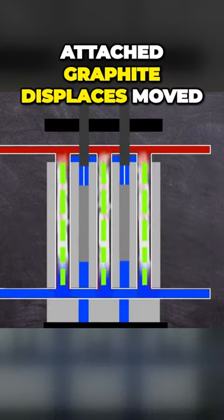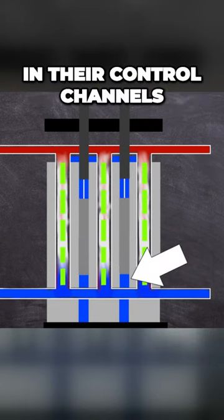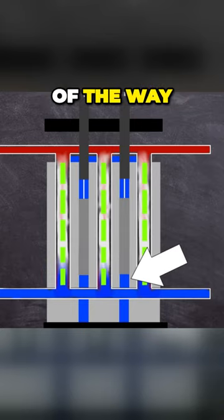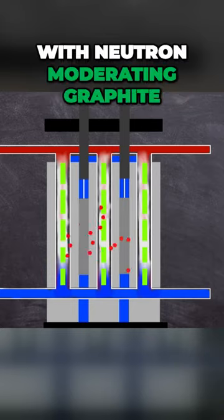As the control rod attached graphite displacers moved down to the lower part of the core in their control channels, the neutron absorbing water was pushed out of the way, creating a momentary spike in power, replacing it with neutron moderating graphite.